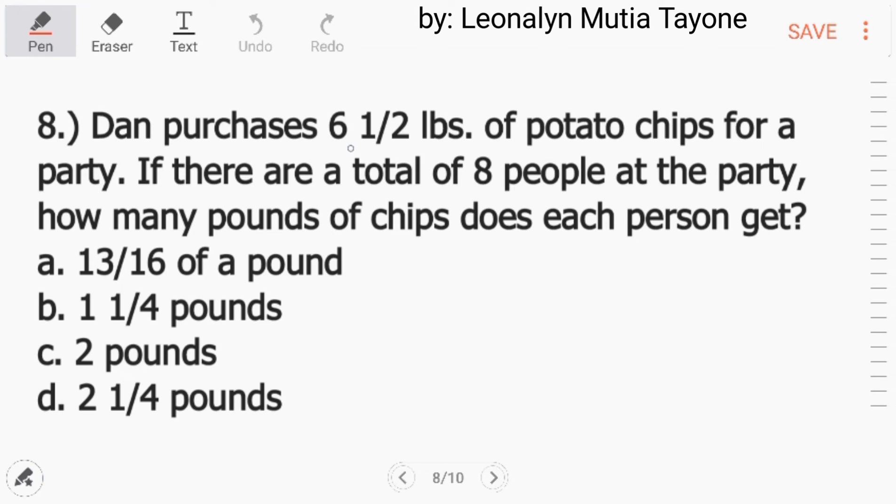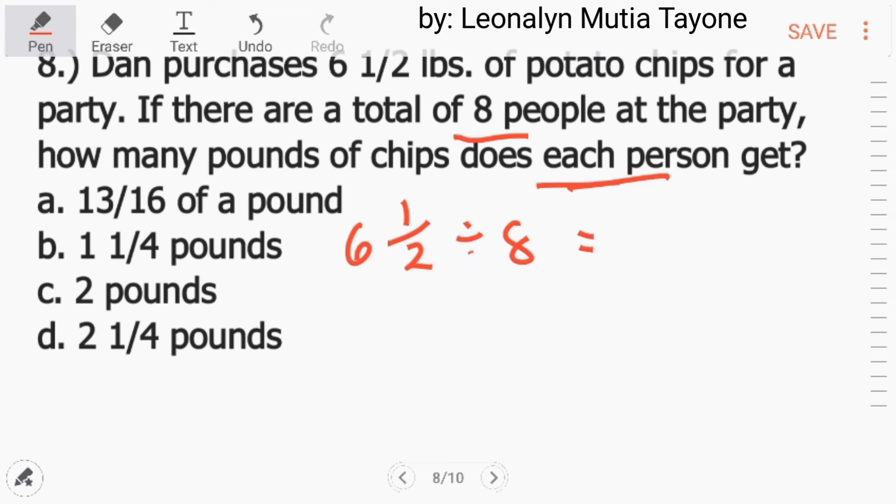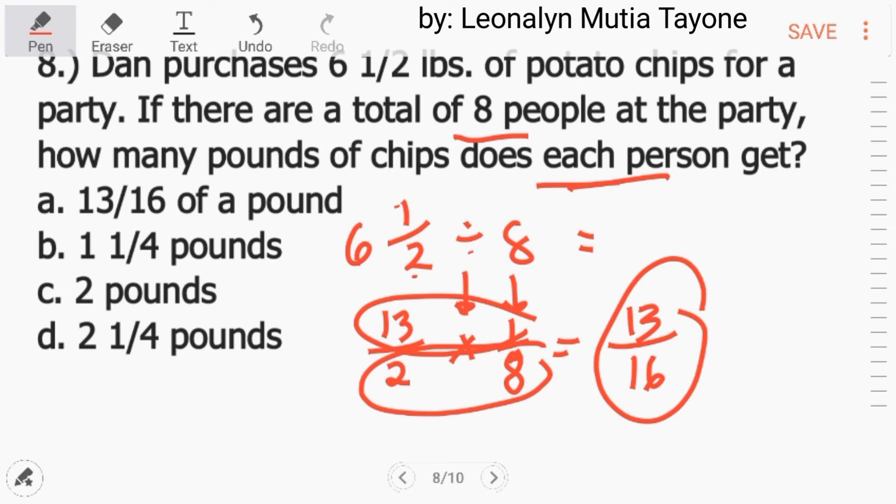Number 8. Dan purchases 6 and 1/2 pounds of potato chips for a party. If there are a total of 8 people at a party, how many pounds of chips does each person get? So, i-divide mo lang si 6 and 1/2 divided by 8. So, kung mag-divide tayo itong mixed number natin, i-convert muna natin into improper fraction. 2 times 6 equals 12. 12 plus 1 equals 13. So, 13 over 2. Itong division maging multiplication. At si 8, ang reciprocal nya ay 1 over 8, na pwede na tayong mag-multiply. This is 13. This is 16. So, ang answer dito ay 13 over 16 of a pound. Letter A.